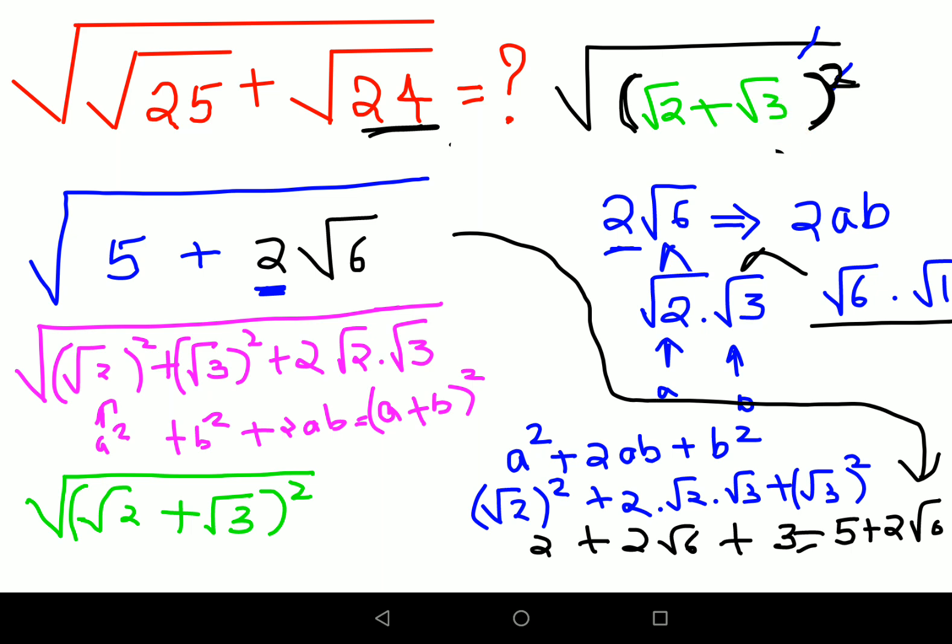and like I had explained at the beginning of this sum that the square and the root will get cancelled. So final answer for this particular question is nothing but what just root 2 plus root 3. I hope this is very very clear to everyone.